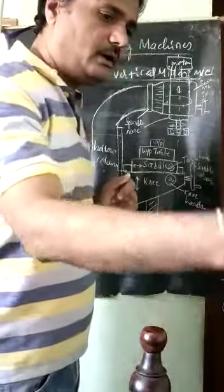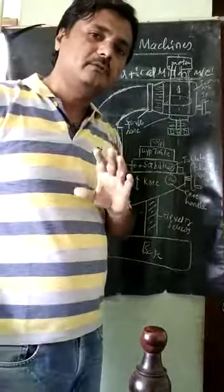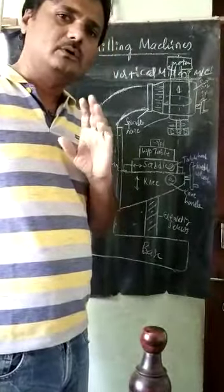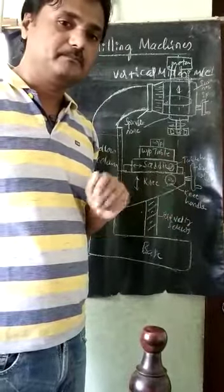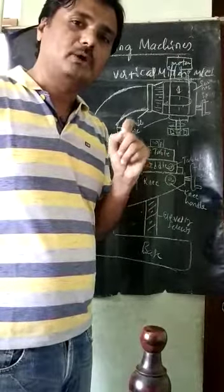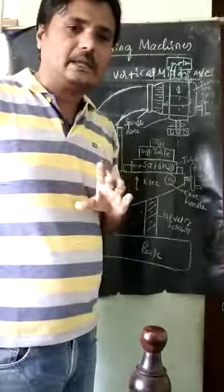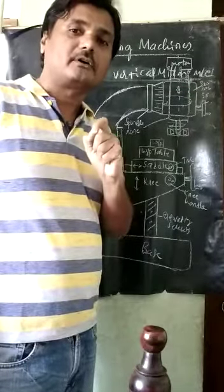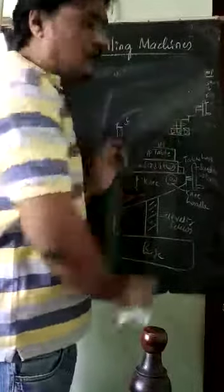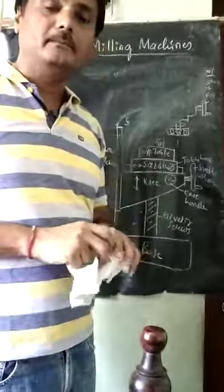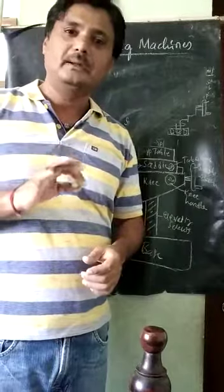Now we will take up another important topic — the operations of milling machines. The operations done on horizontal milling machines are different from those done on vertical milling machines. We will study this in the next video lecture. I will continue with the operations of milling machines in the next lecture. Thank you.